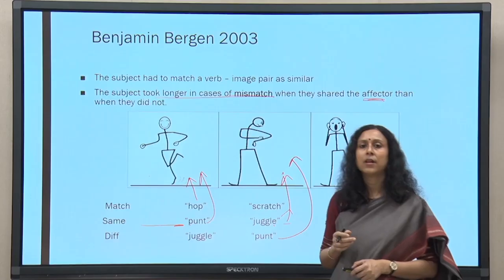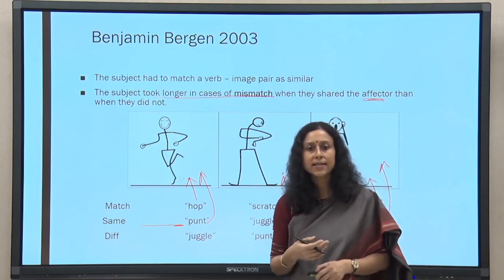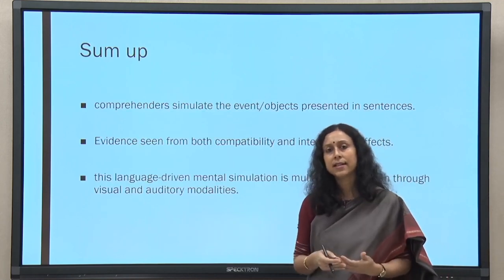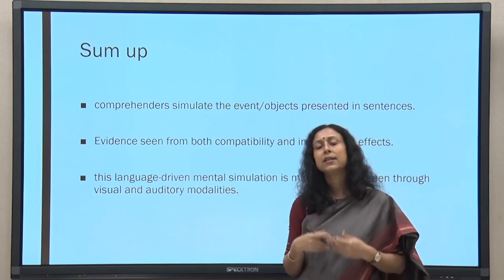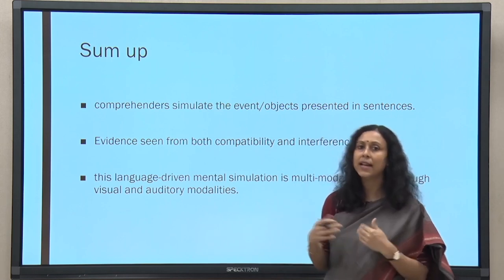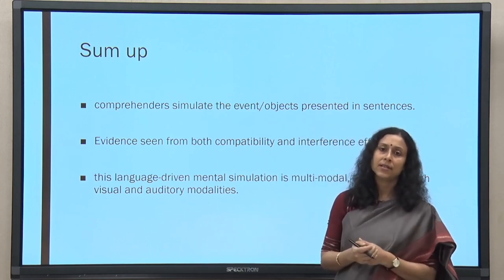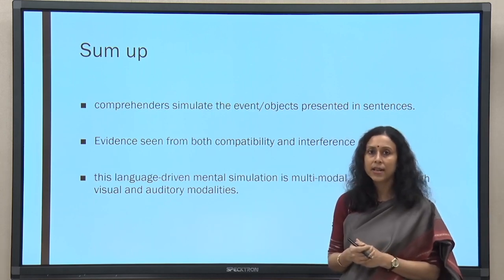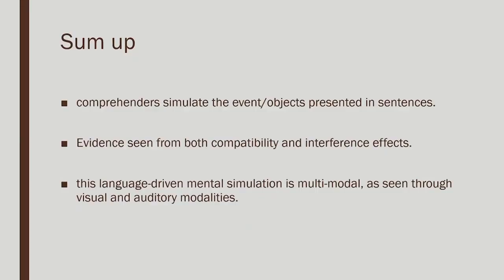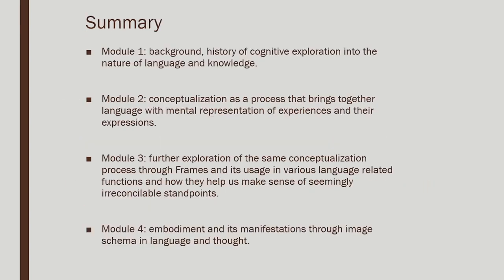All these studies — whether compatibility effect or interference effect — show that sentences or words lead us to simulate a scenario. On the basis of simulation, neural activation automatically follows. If the task comes subsequent to the prime, we see facilitation; if it happens simultaneously or in quick succession, we see interference. Either way, comprehenders simulate the object or event presented in sentences. Both compatibility and interference effects are evidence of the same hypothesis: this language-driven mental simulation is multimodal, as seen through visual and auditory modalities.